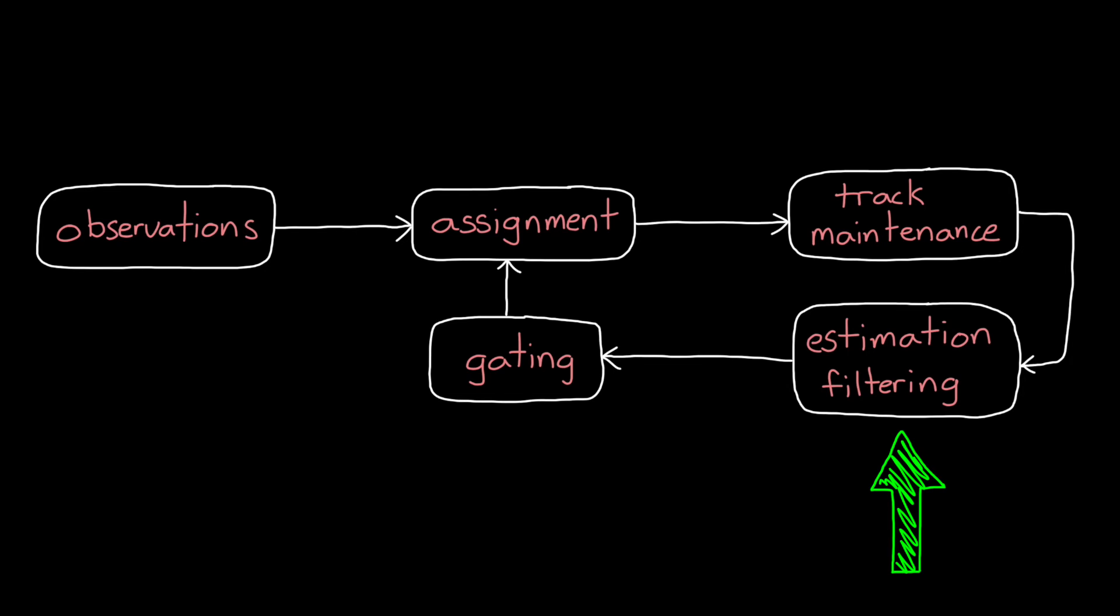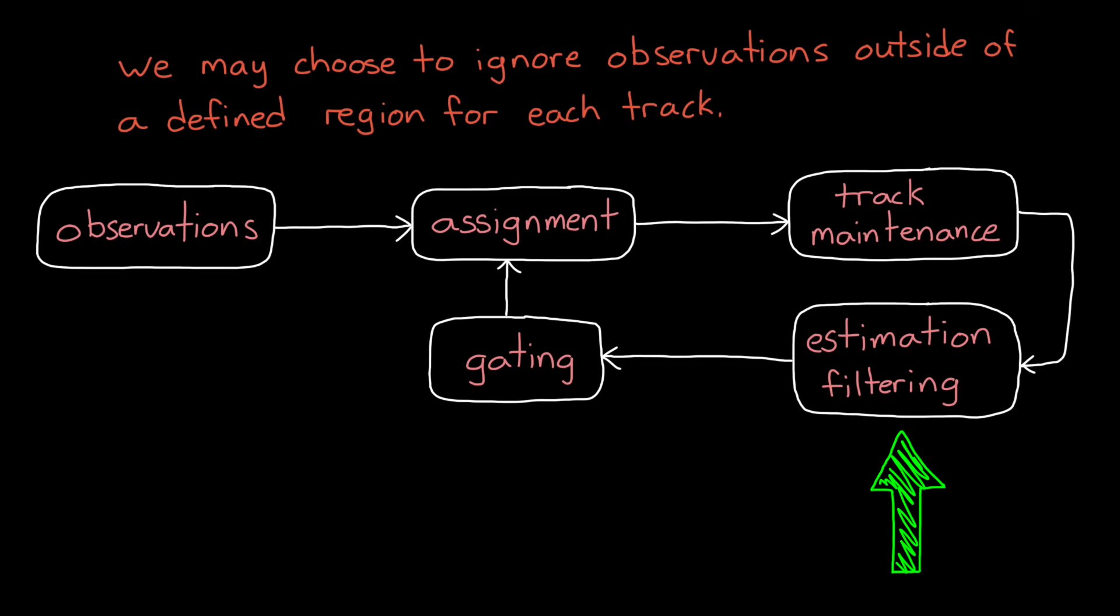However, it would be computationally foolish to look at every single observation and consider how likely it is to be assigned to every single track. Therefore, we may choose to ignore observations outside of a defined region for each track. And this is called gating, and it's a screening mechanism that determines which detections are valid candidates to look at for assignment, and which should just be flat out ignored.